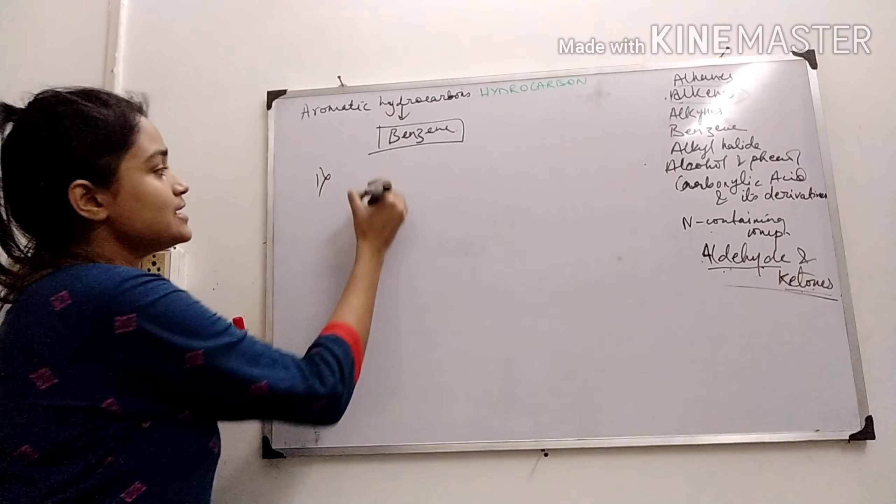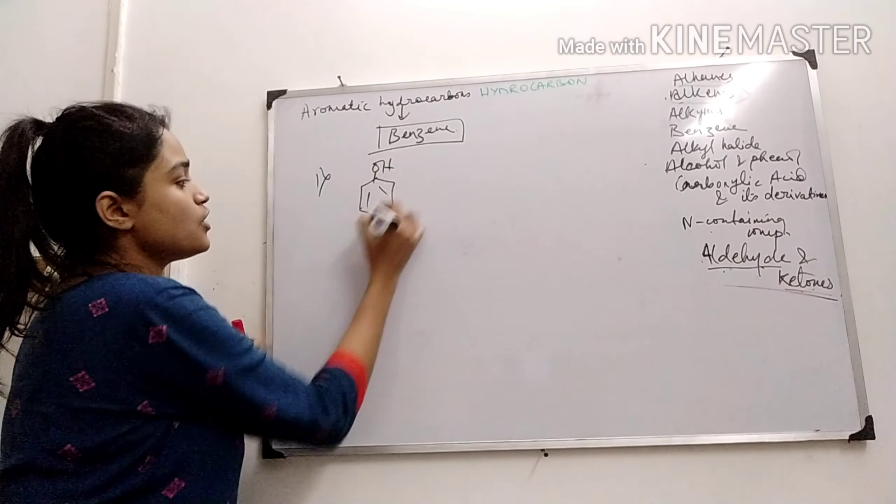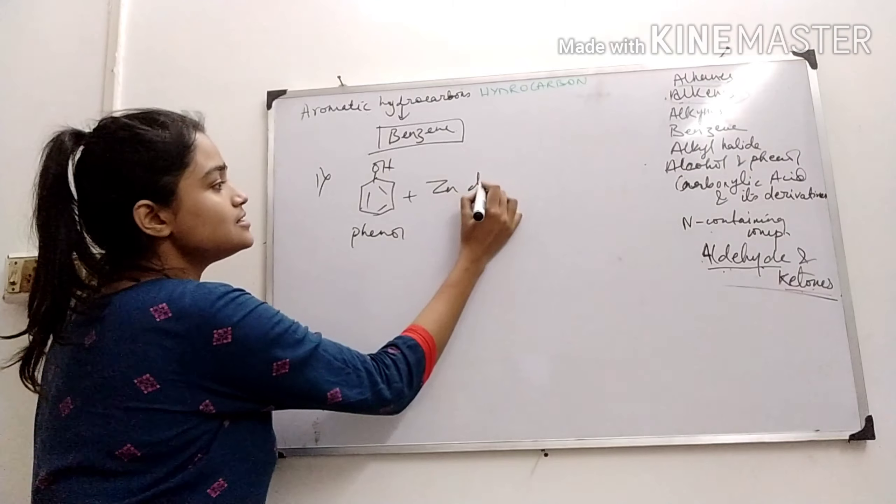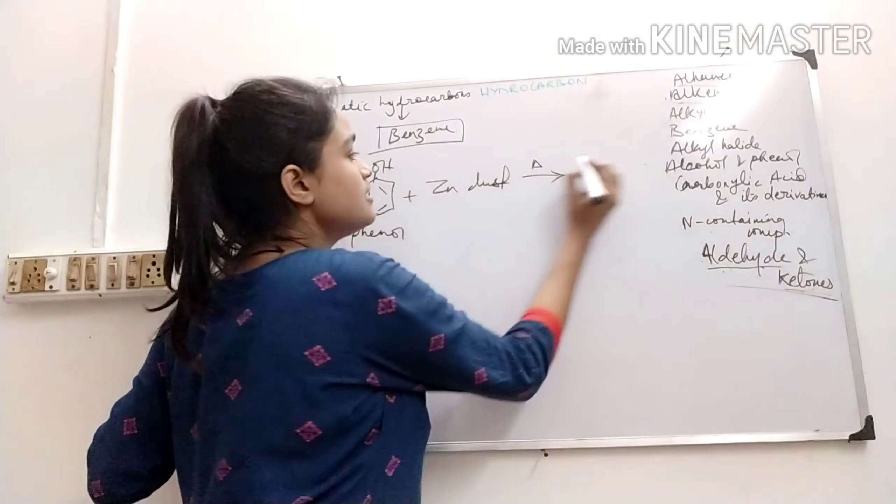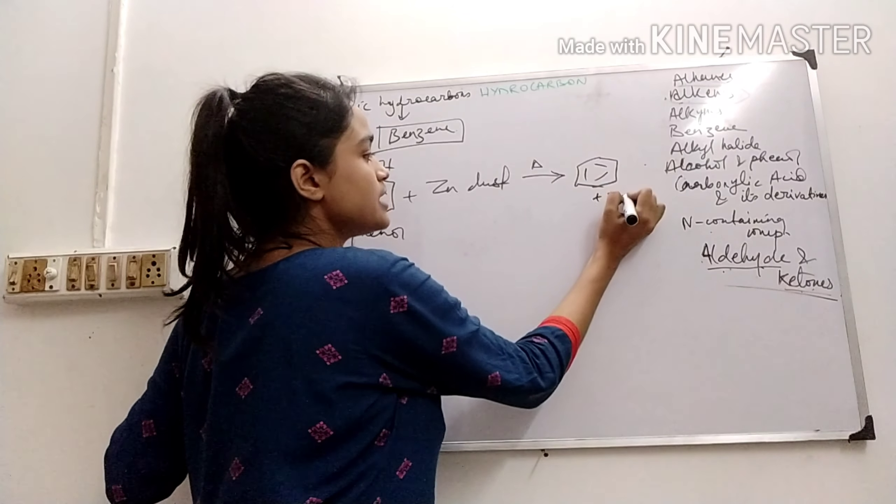So the preparation of benzene from phenol. First is from phenol. So this is phenol. Now if I add zinc dust and heat it we will get benzene. Zinc oxide will be formed.